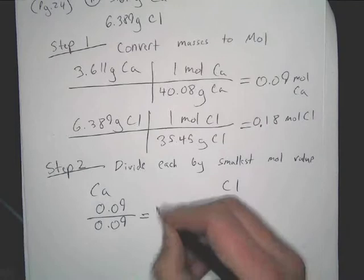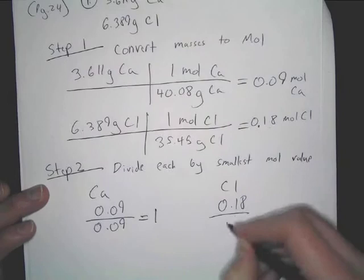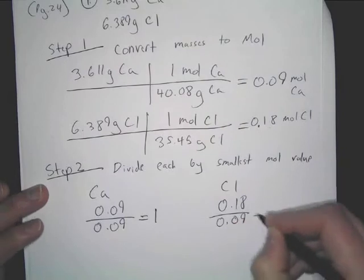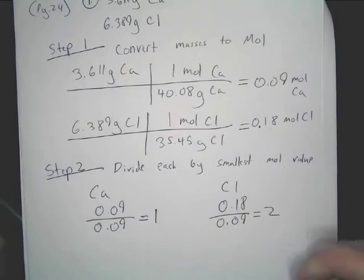Obviously. One. So one calcium. Now, chlorine. Divide that. What does that come out to be? Two.